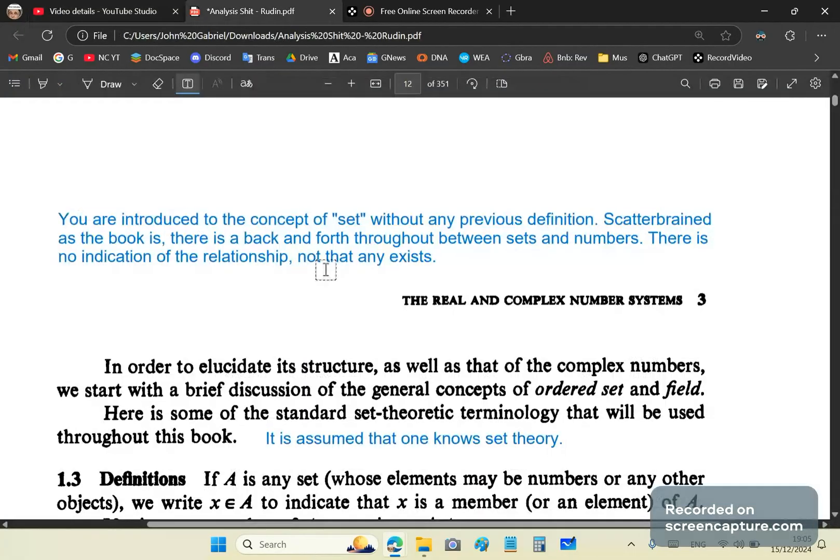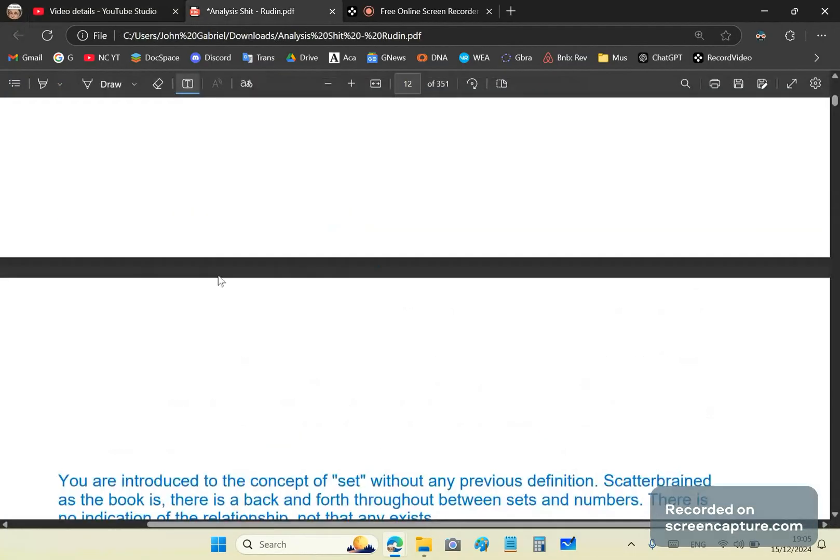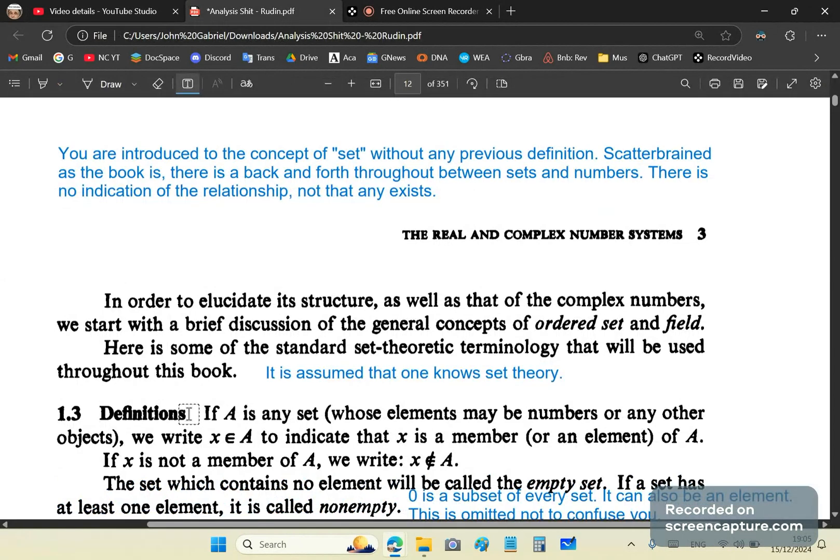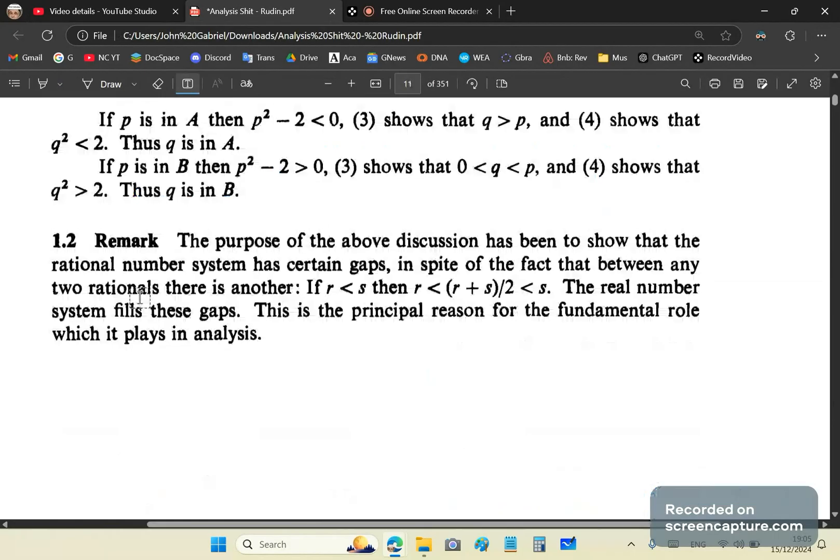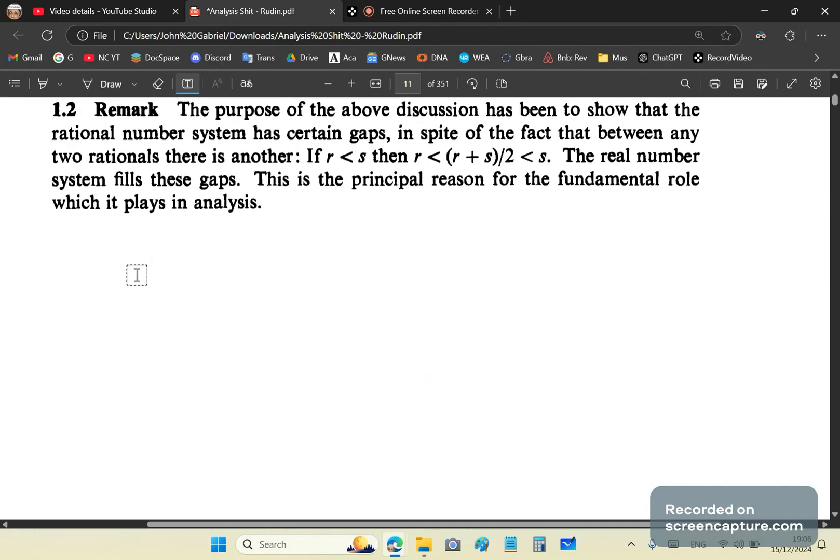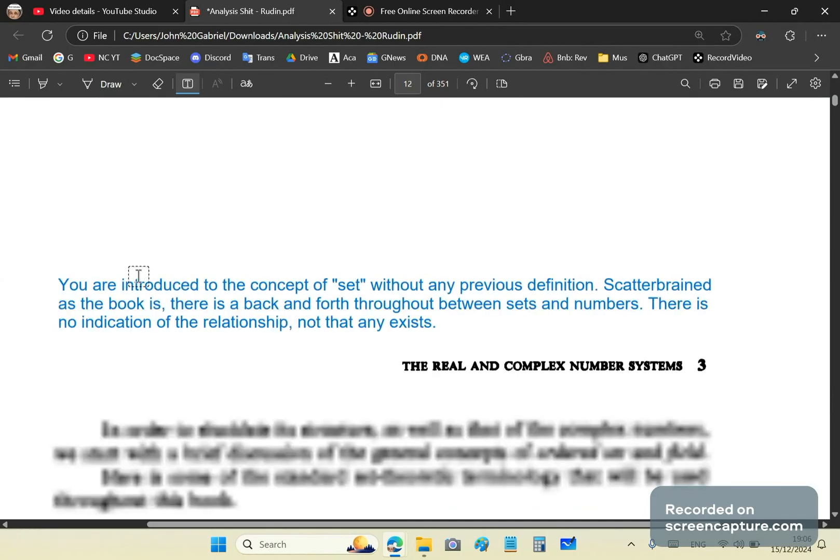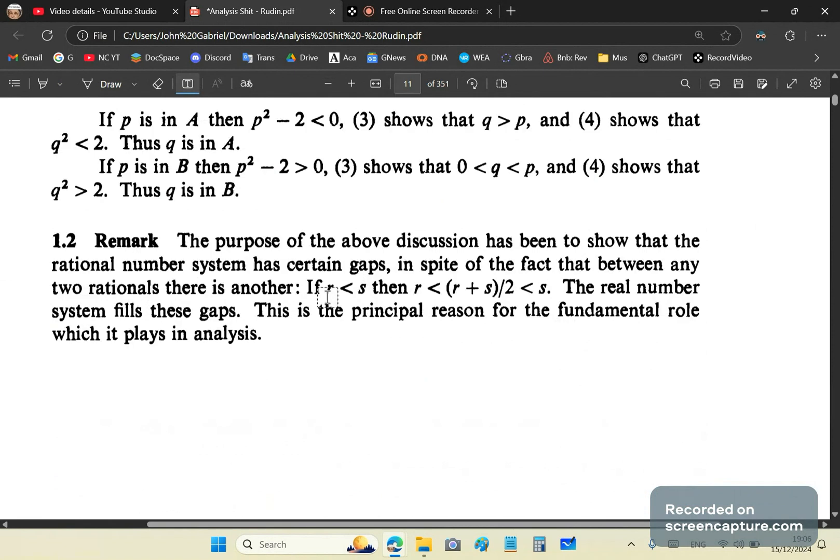So in part two, we'll continue with Rudin's definitions. He begins to talk now about the structure. He says the purpose of the above discussion has been to show that the rational number system has certain gaps. And then in spite of the fact that between any two rationals there is another, the real number system fills these gaps. So he's made a lot of bullshit claims. And of course, he's about to set out now to demonstrate why these claims are so. Still remember that he hasn't actually shown anything about the rational number system. He hasn't defined it.